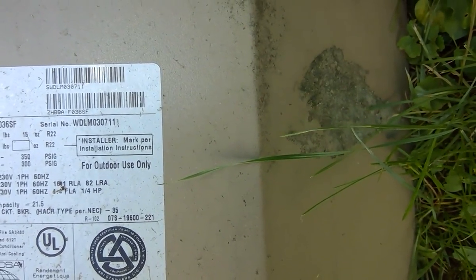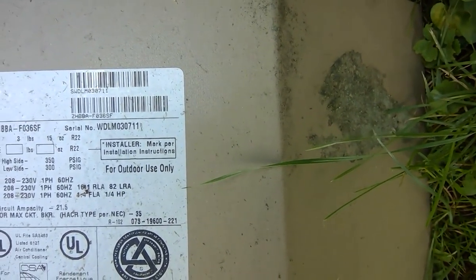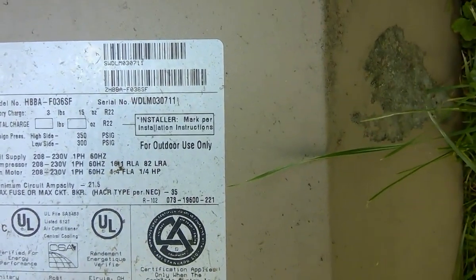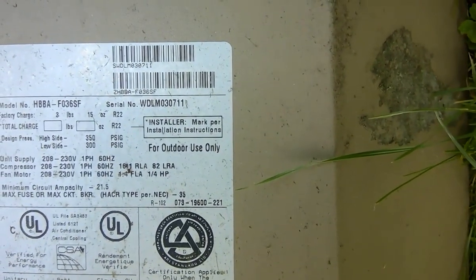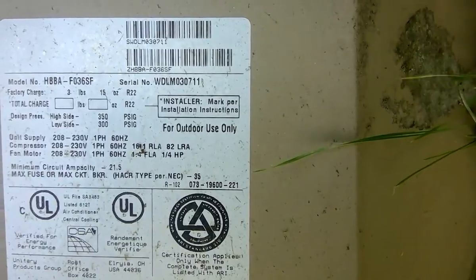So you can see that the spec on the sheet is 82 lock rotor amps and 16.1 running amps. So I was a little under before. Like I said, I think it was 77. We'll have to go back to the video and look. And now I'm at 53. So that's it for now.